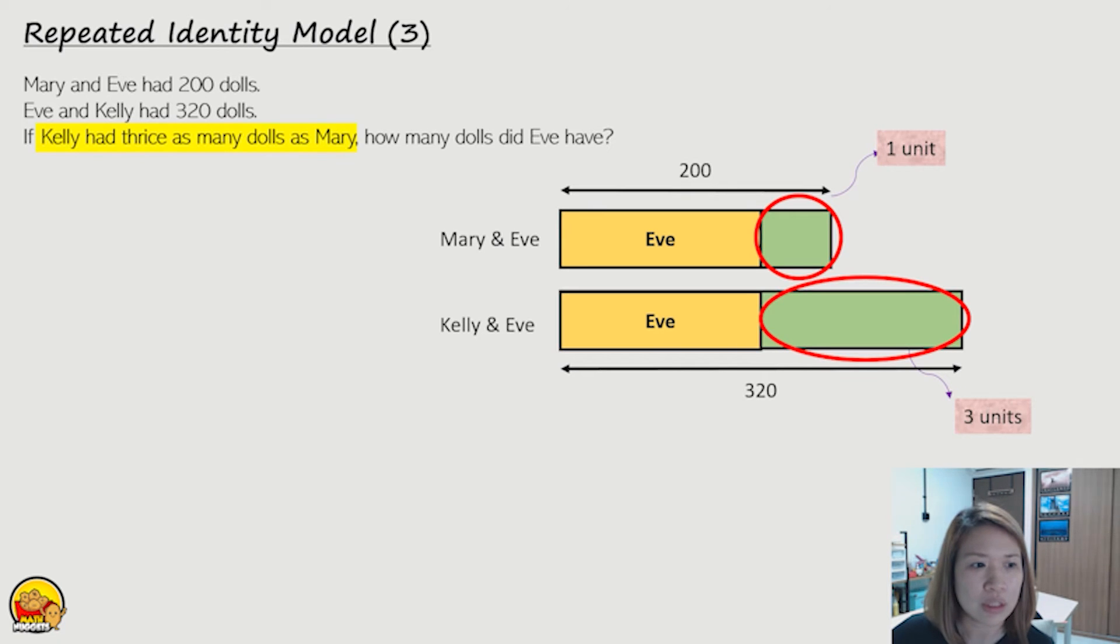Okay, so what about those? They tell us that Kelly had thrice as many dolls as Mary, which means Kelly would be three units and Mary would be one unit.